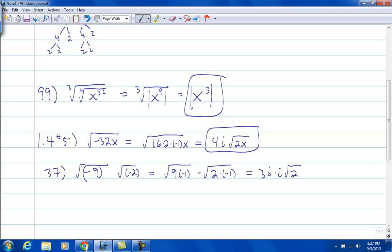So 3 times i from the first part, i times square root of 2 from the second part, that's going to be 3i squared root 2. And i squared is negative 1, so that is negative 3 times the square root of 2.